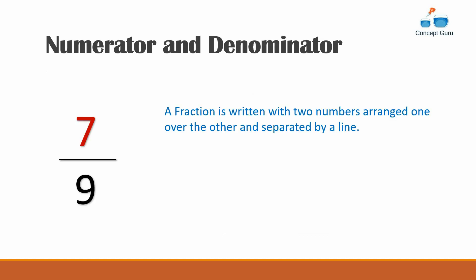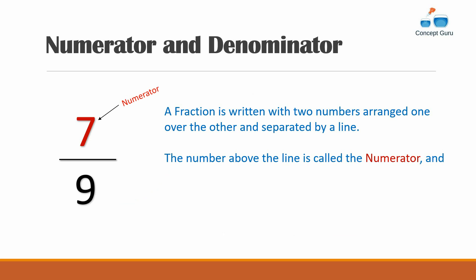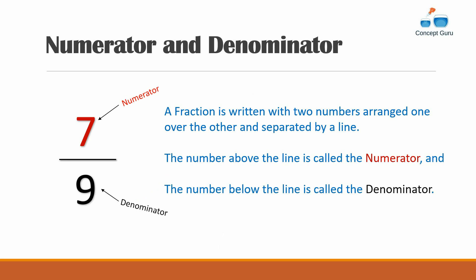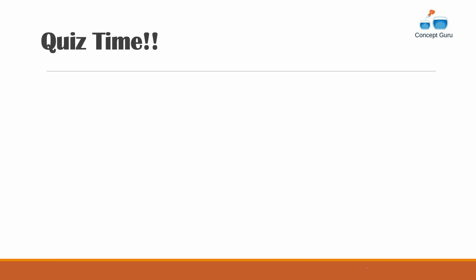A fraction is written with two numbers arranged one over the other and separated by a line, just like we wrote one by two and one by three. The number above the line is called the numerator, and the number below the line is called the denominator.